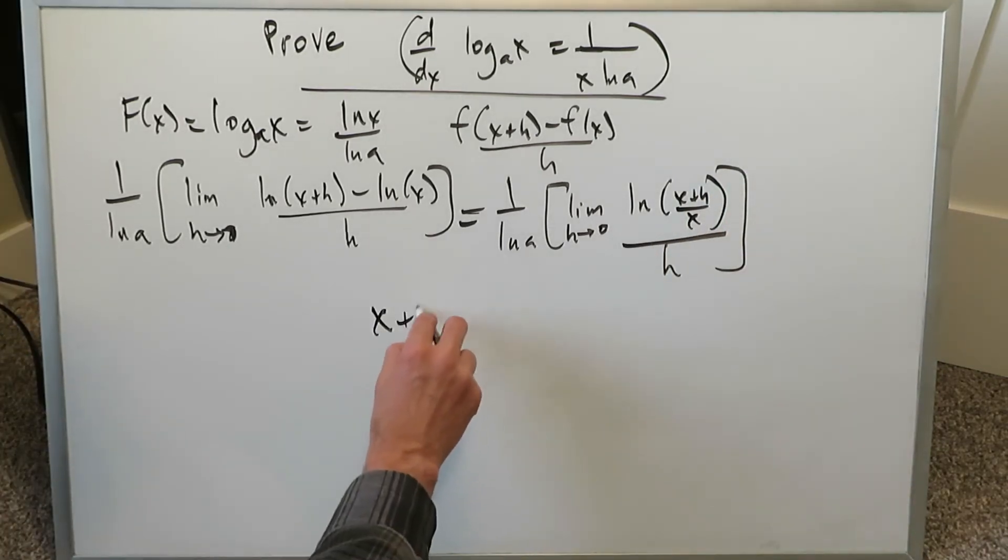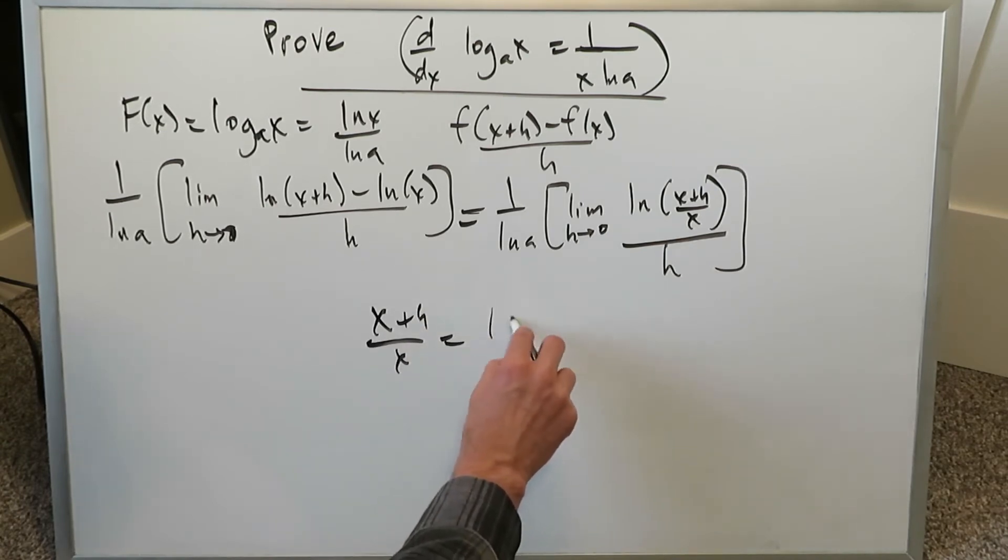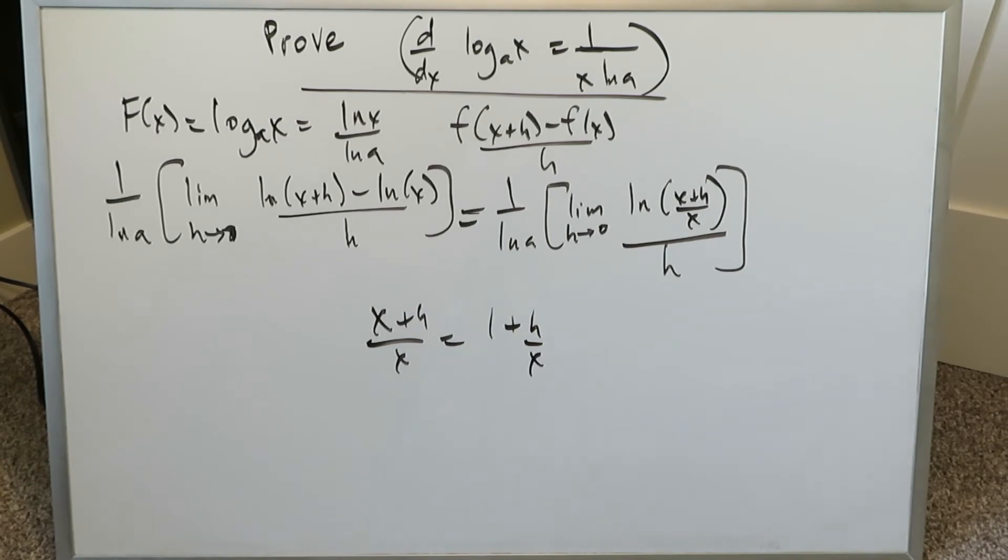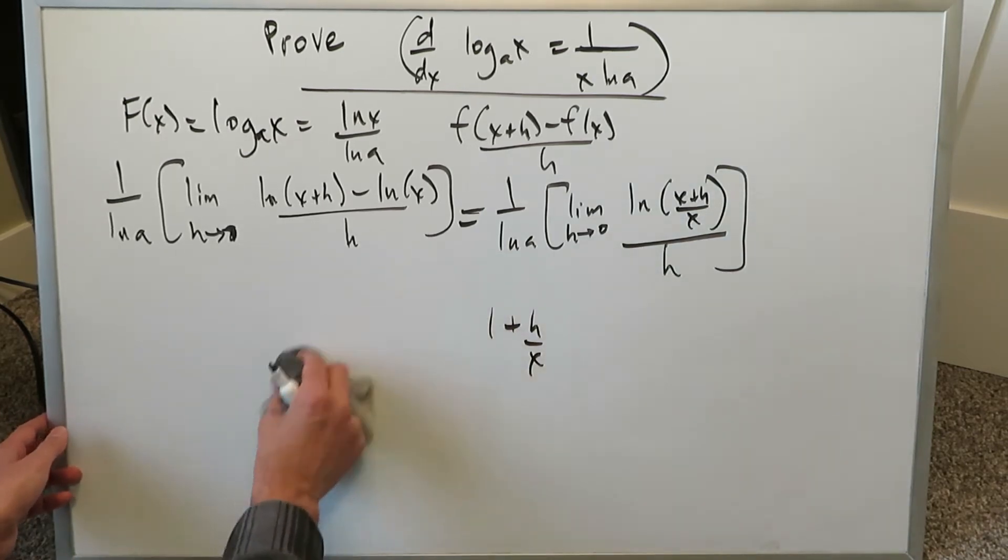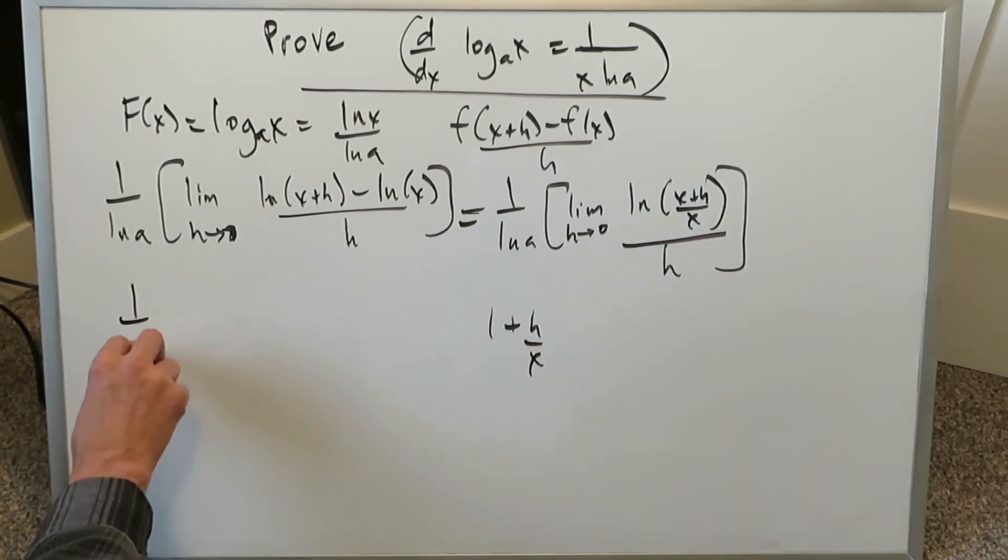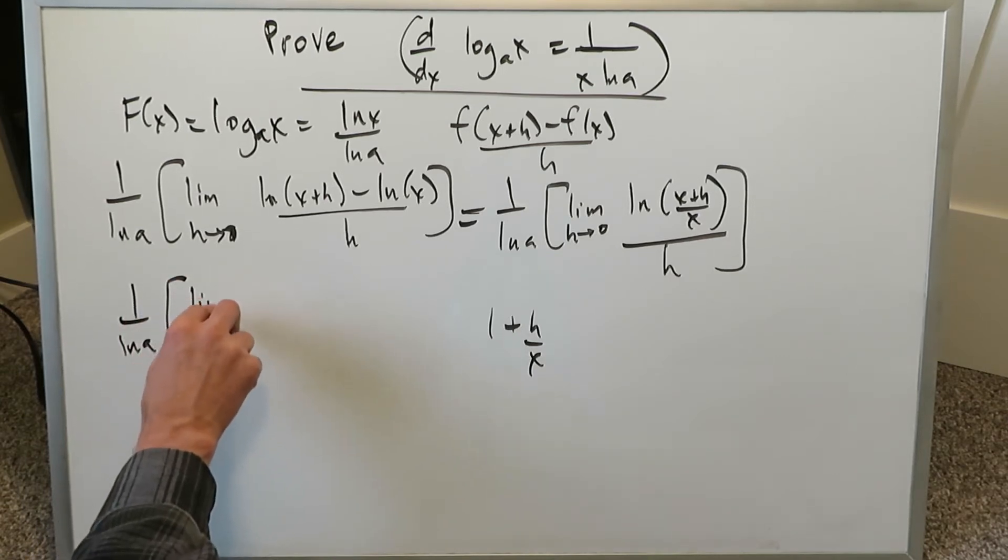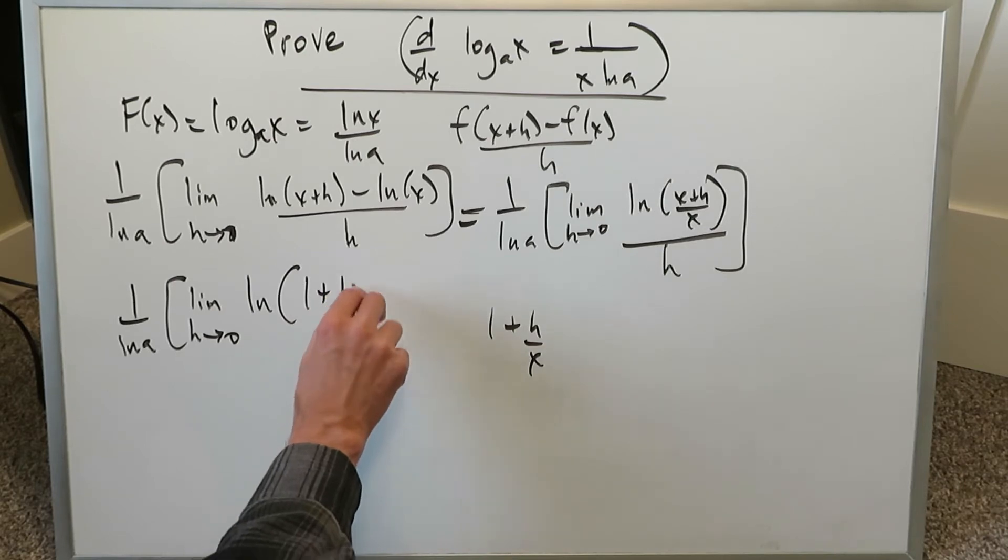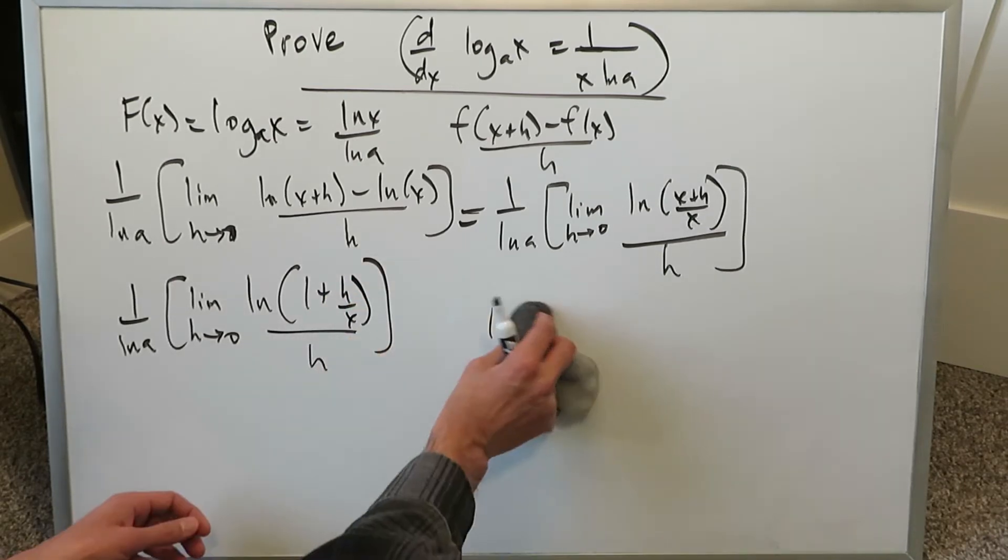This x plus h over x is no different than 1 plus h over x. That can simplify to that, and we will do that exactly. 1 over ln A, we have limit as h approaches 0. We have natural log 1 plus h over x all over h.